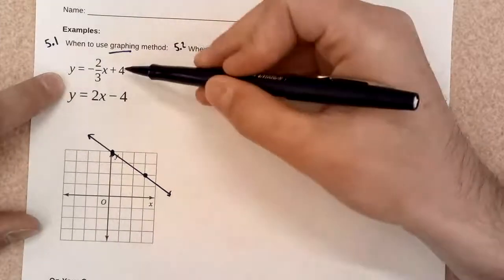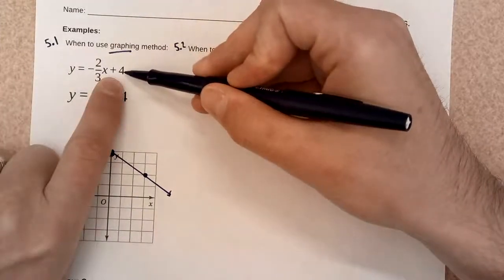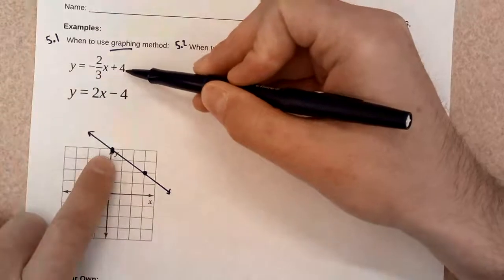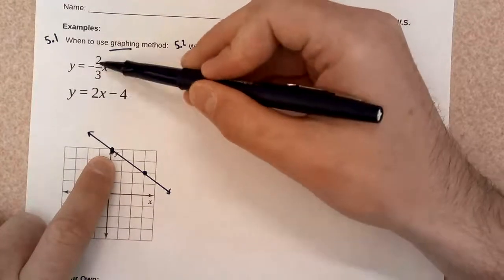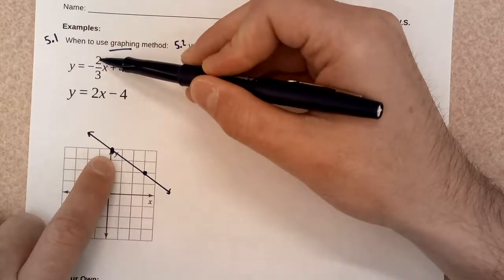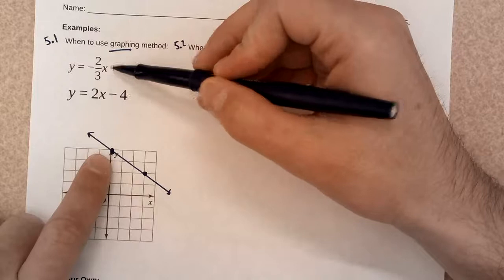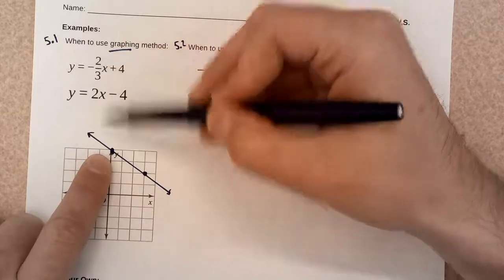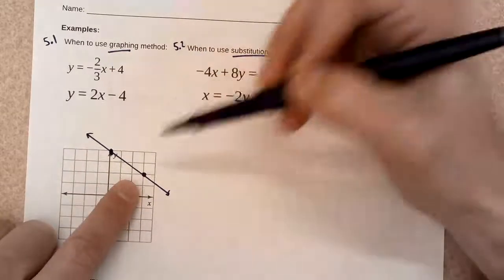So, to solve using graphing, I'm going to start with the y-intercept. It's my starting point, here at 4. And then the number with the x, that's the slope. That tells me how to find another point on the line. So, I started up at 4. I'm going to go down 2 over 3. Down 2 over 3. And there's one line.